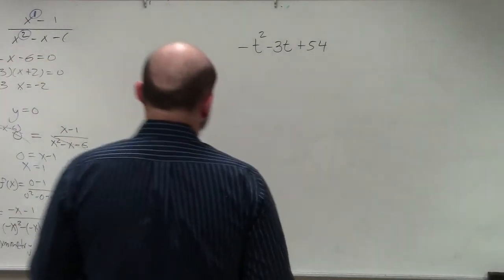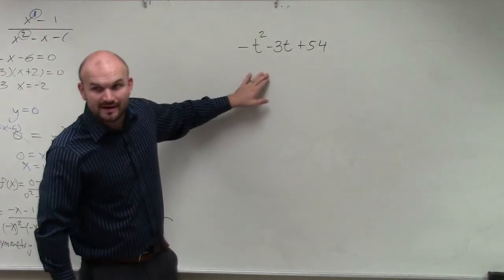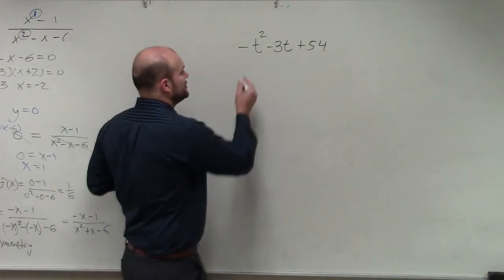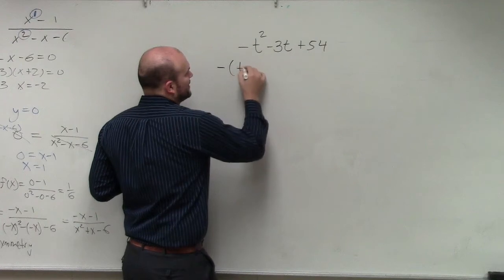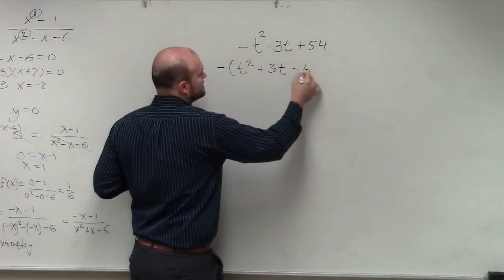So in this example, ladies and gentlemen, if you have a negative in front, the recommendation that I have for you is just to get rid of that negative. And to do that, all we simply can do is just factor out the negative. So therefore, this becomes a t squared plus 3t minus 54.